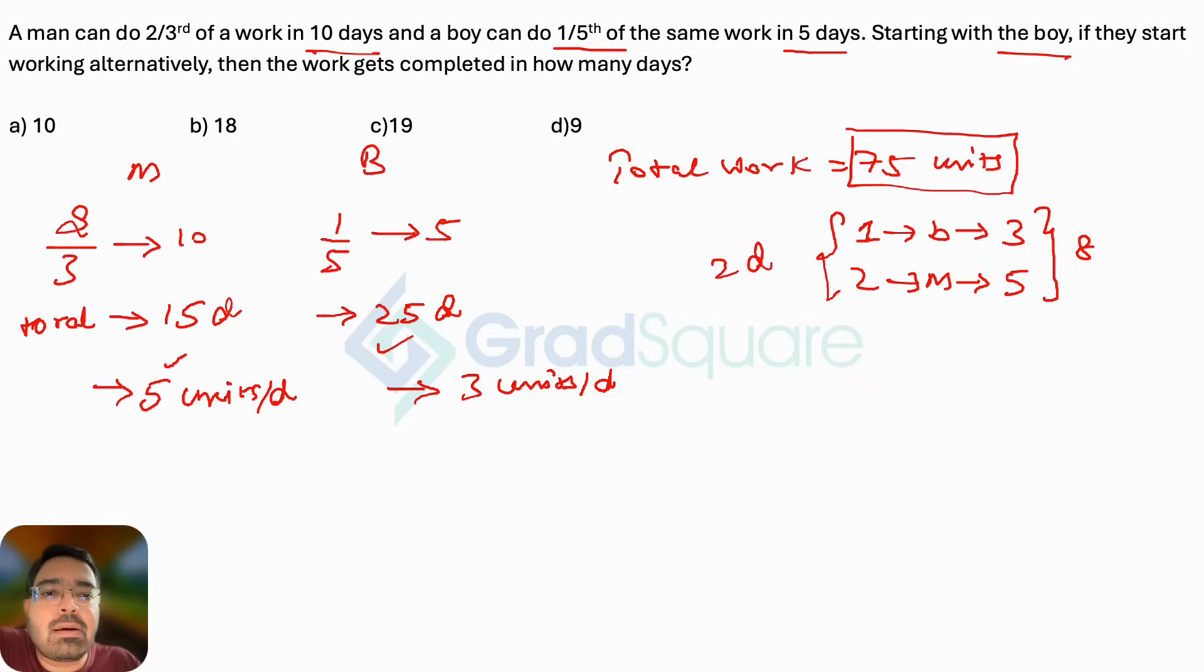So how many such complete two days can be there? So I will try to go as close as possible to the 75 units by multiplying this 8 into 9 and I'll get 72 units of work done in 18 days, because this two should also be multiplied by nine.